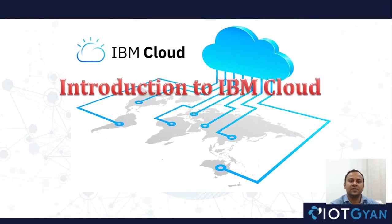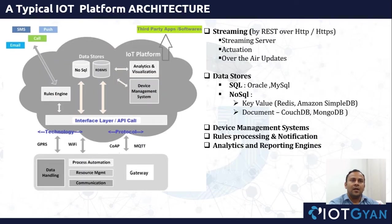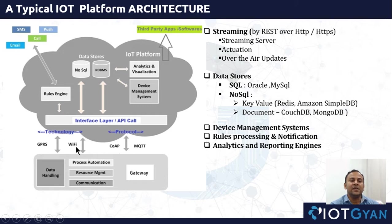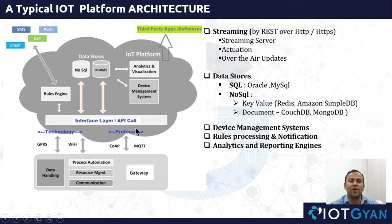Hello and welcome to IoT Gyaam. This is Tapan and today in this session we learn about introduction to IBM Cloud. In general, if we study any of the IoT use cases it contains three things: first one is the device, second one is the cloud platform, and third one is the application. All of them are connected together by using communication channels like Wi-Fi or GPRS, and at the application layer protocol it may be MQTT, CoAP, or any other one.